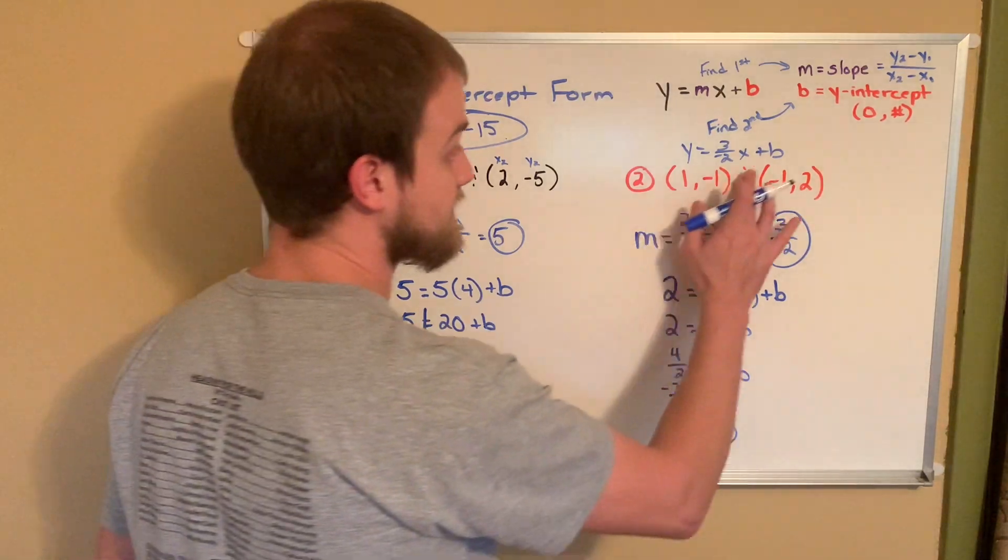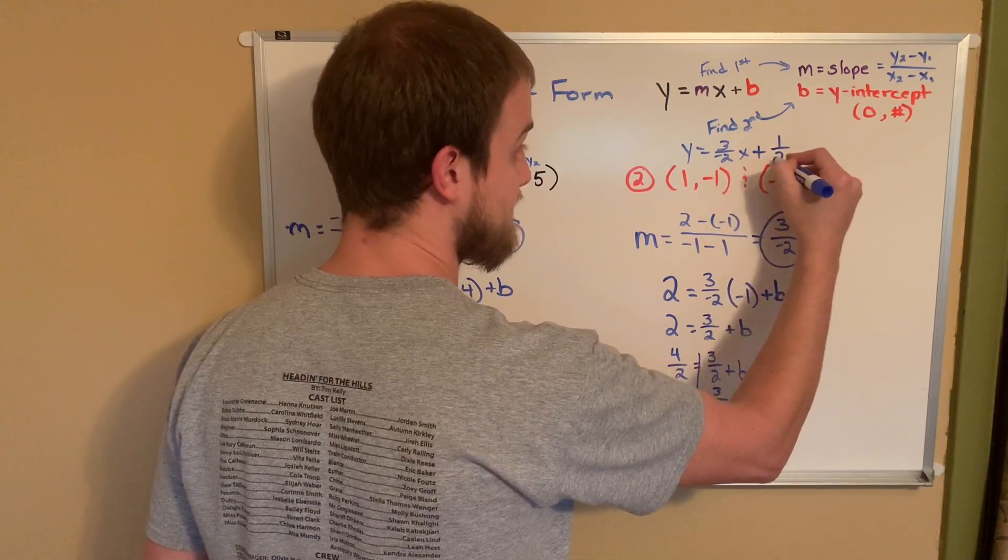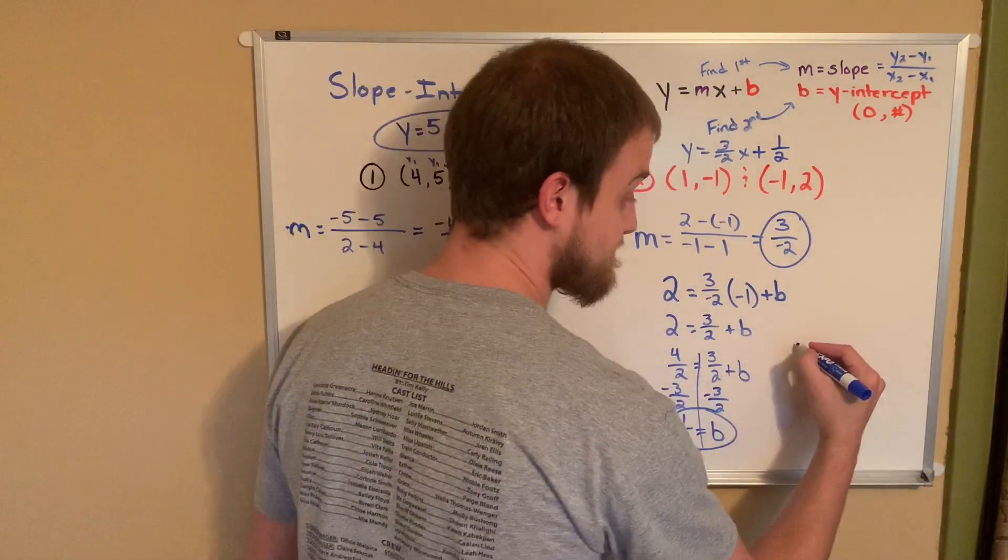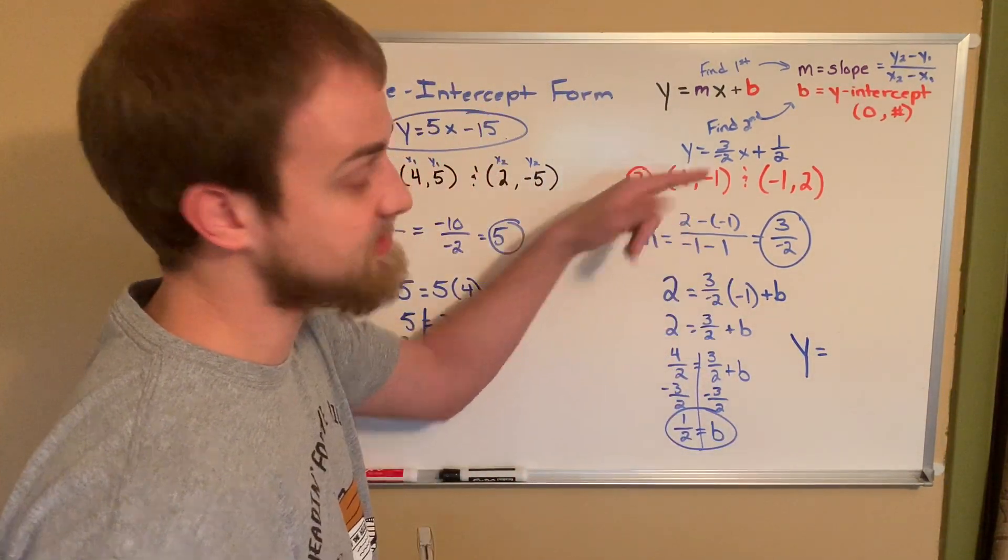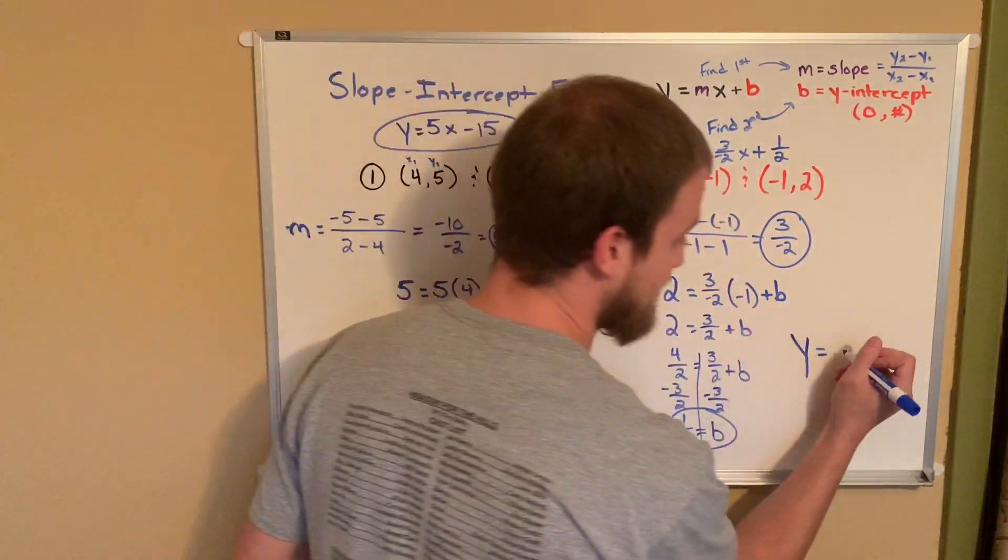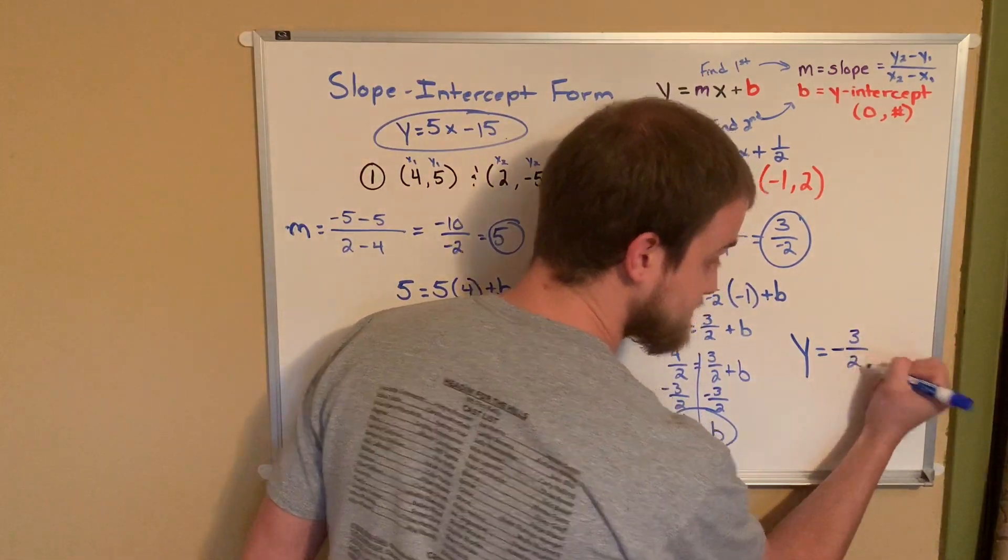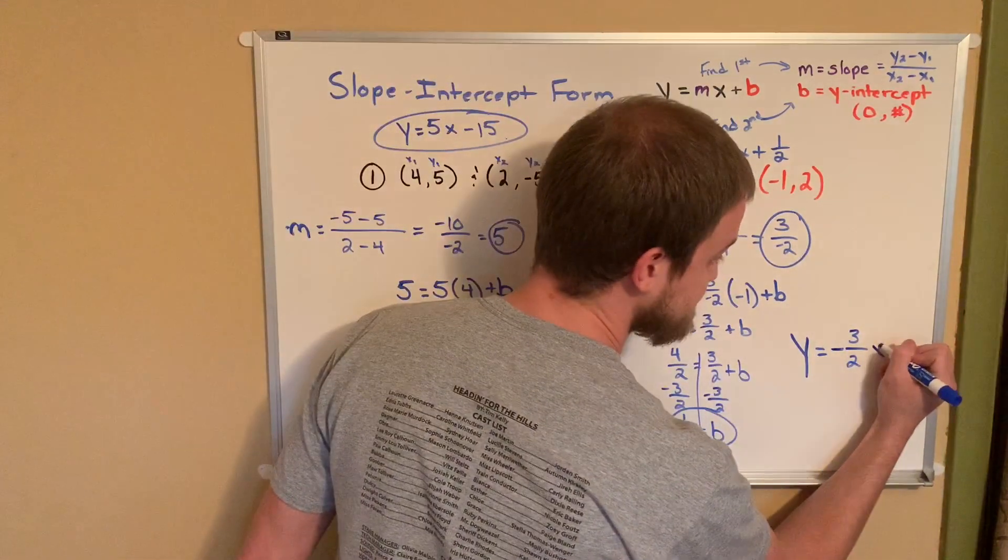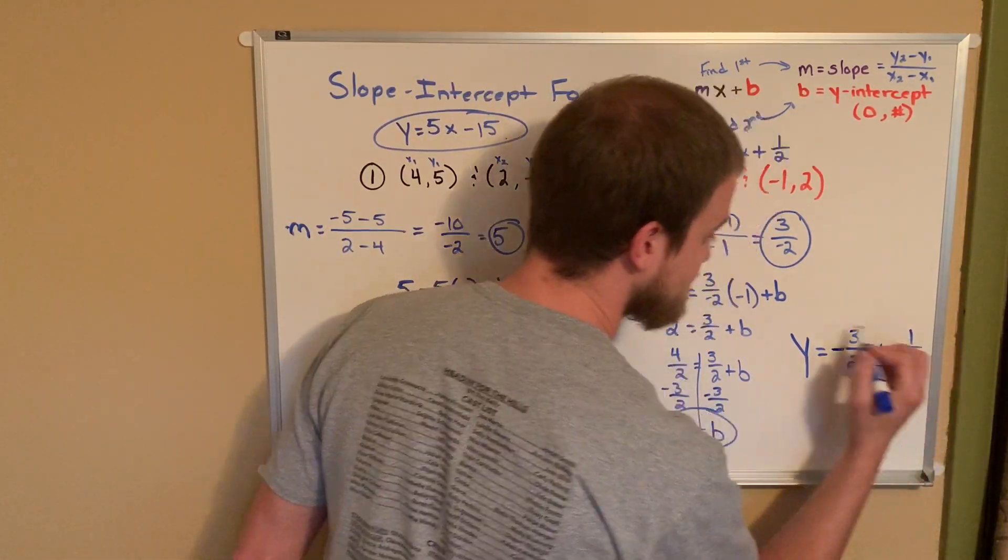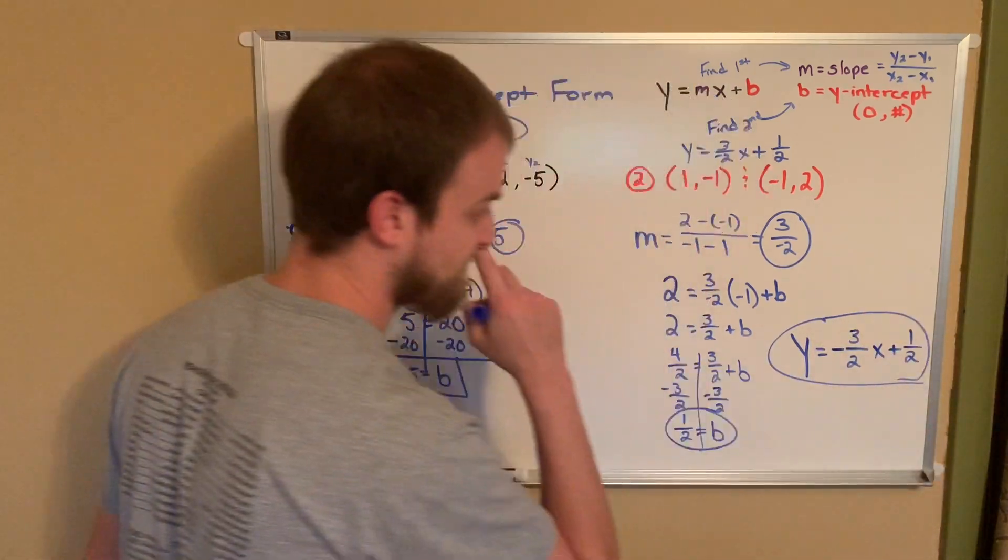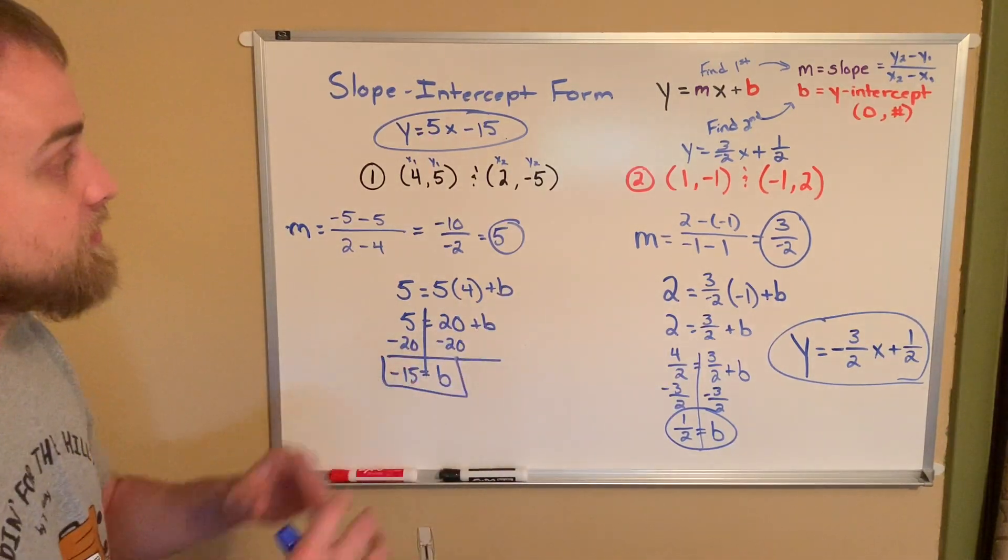So now that I know that, I can come back up here. And it's positive, so I can keep the plus sign. 1 half. And that's kind of squeezed in there. Let me rewrite that for you. So my final answer is y equals, and actually, even further than that, just to make things super clean looking, I'm going to take this negative and I'm actually going to put it out in front of my fraction. 3 over 2, which is my slope that I found, x, and my y-intercept was positive 1 half.